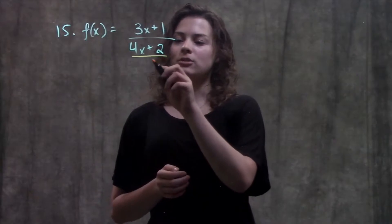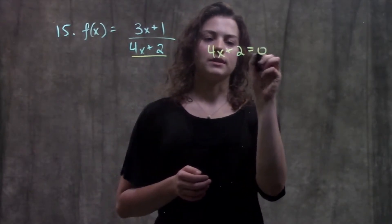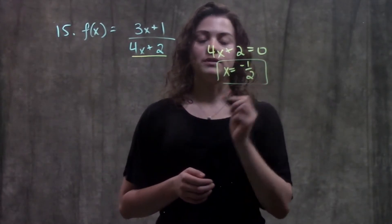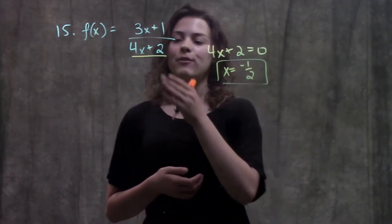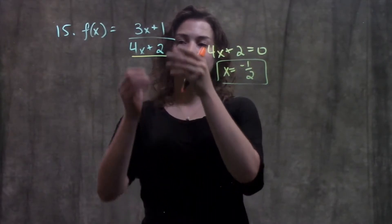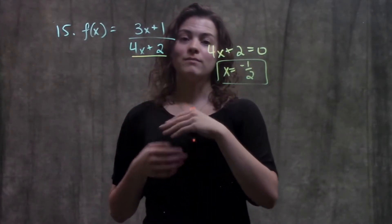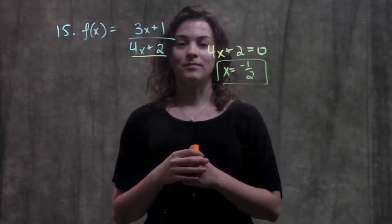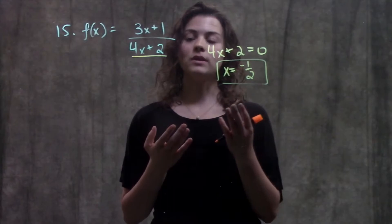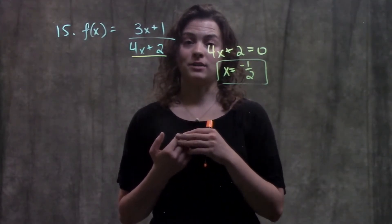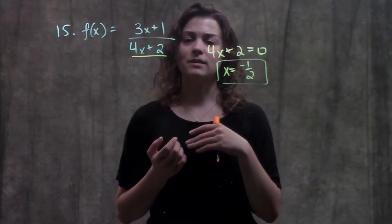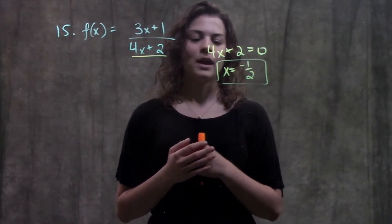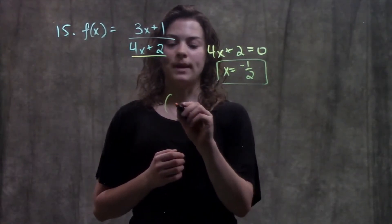To solve for my domain, I'm going to take this denominator, set it equal to zero, and solve for x. When I do that, I get x is equal to negative one-half. If I were to plug this value into my function, I get some number over zero — can't happen, doesn't work. That means it's not a valid answer for my function. But that's the only value that would give me an invalid answer, so I can plug in anything else and this function would give me an actual value. This is the only limit in my domain.